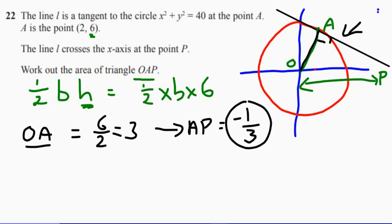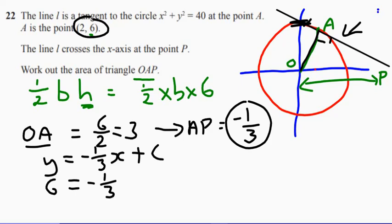So now we've got the gradient of our equation. So let's write down, so where are we up to? We've got Y equals minus 1 third X plus C. So I need to work out the interception point up here. So let's put in our known points, 2 and 6. So if we do that,